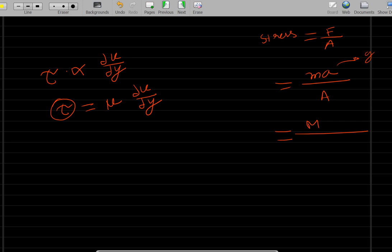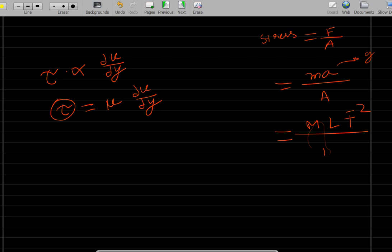Acceleration's dimension is meter per second square. So meter means length, second square means T inverse 2. If it's in the denominator, time becomes minus 2. Then divided by area. Area is written as meter square, so area will be L square. So you can give the dimension for stress as M, L minus 1, and T minus 2. So that will be tau, M L^-1 T^-2.